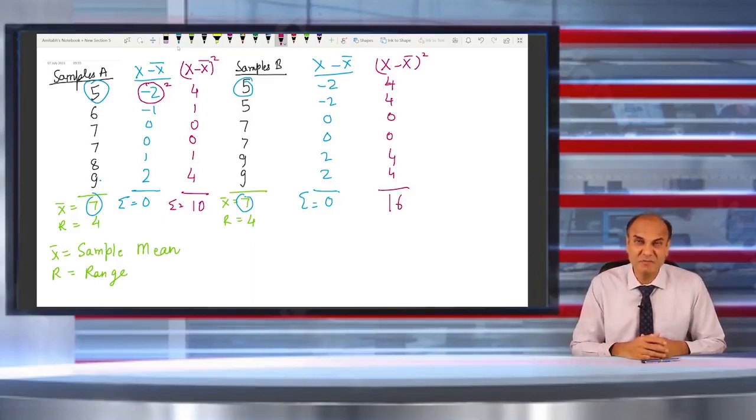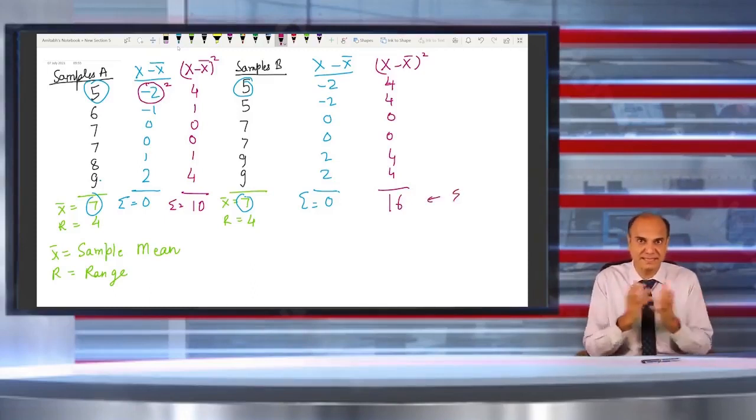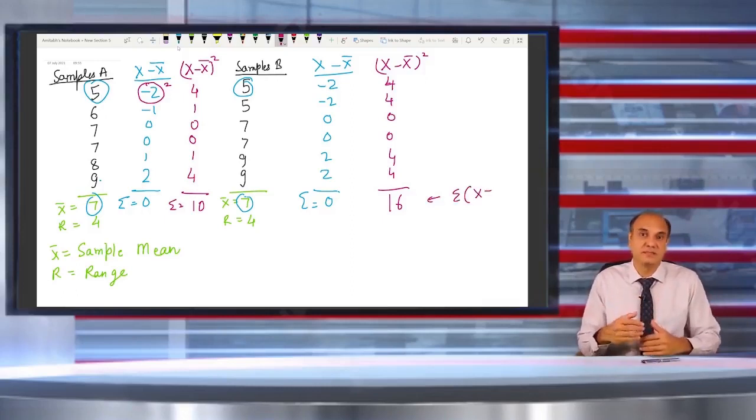Yes, that sum of squares is an indication of the spread present in my data set. Obviously the sample size here in both the cases was 6 and 6.